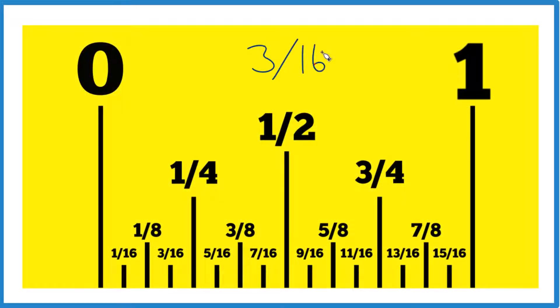Three sixteenths - we want to figure out where three sixteenths is on our ruler or number line. Here's the way to think about it. We go from zero to one here, so half of this is going to be one half, split right down the middle.